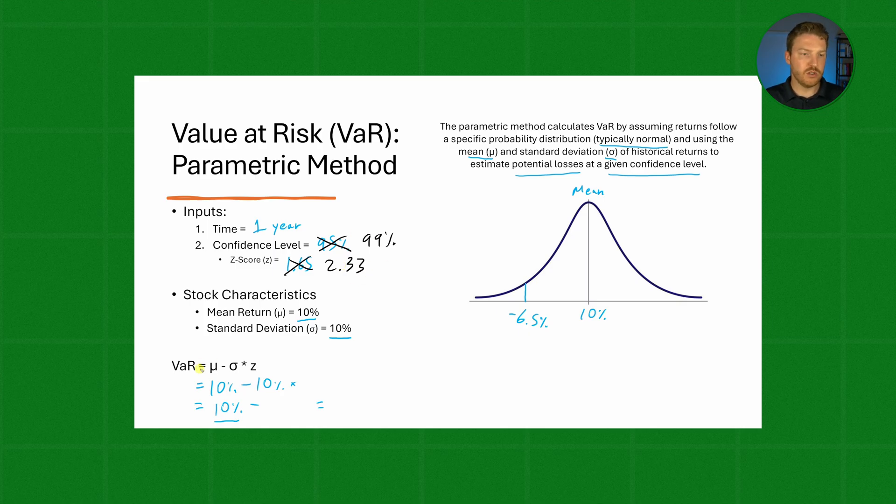Now we go back to our VaR formula. The mean and standard deviation remain the same, both at 10%, but now our Z-score is 2.33. So it's 10%, which is our mean expected return,